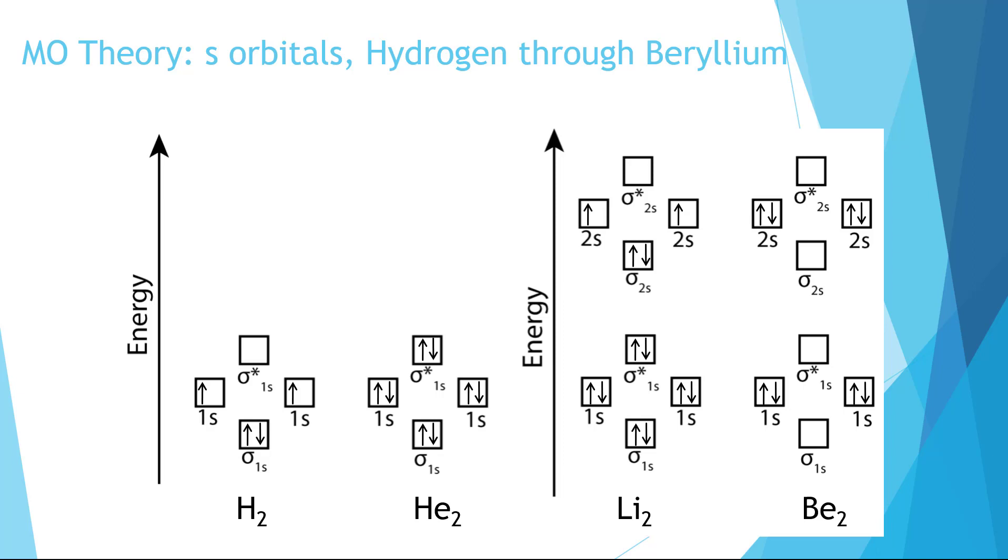We can do the same thing for beryllium, though now we'll have eight electrons. So we'll fill in from low to high until we've used up all of our electrons.